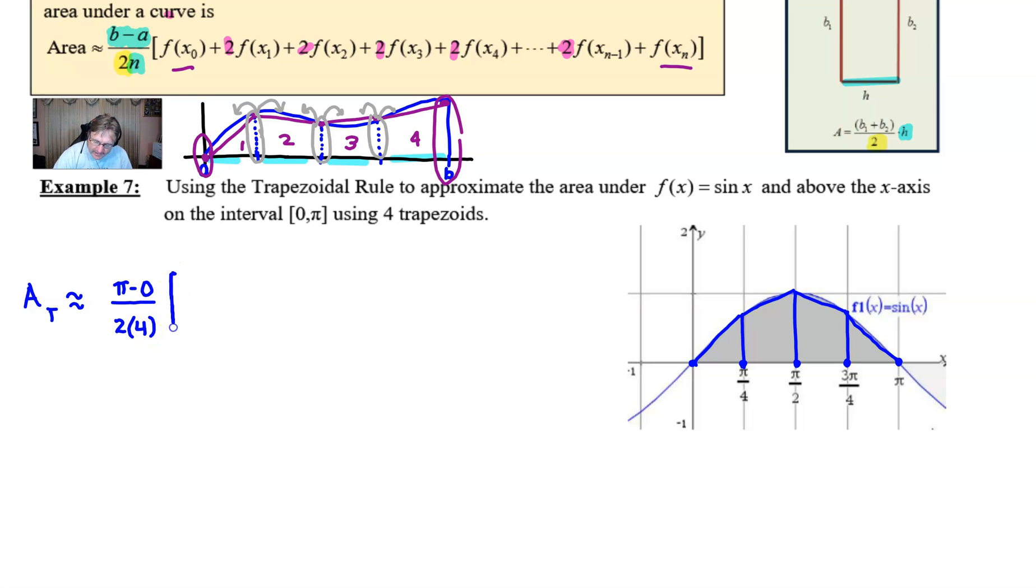Next up, we take our function, which is of course the sine function, sine of x, and we're going to evaluate it at x_0. Now you probably haven't given this a whole lot of thought yet, but the left endpoint we typically refer to as a, but it also can go by the name x sub zero. They are the same thing.